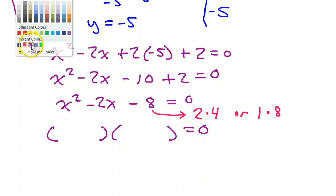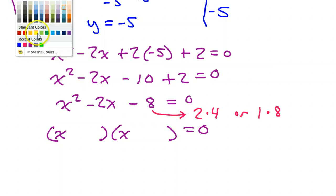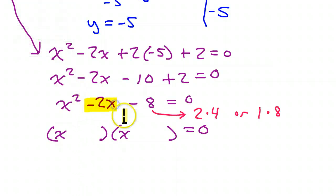So, x squared can only be x times x. With the 8, keeping in mind that we're shooting now for a middle of negative 2x. 2 and 4 is looking good. So, let's go ahead and do the 2 and the 4. Remember, the key to factoring trinomials is inner plus outer must equal middle.